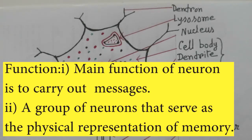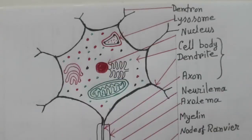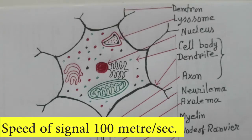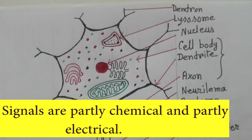The group of neurons serves as the physical representation of memory. Electrically charged chemicals flow from the first neuron's axon to the second neuron's dendrite, and from that dendrite to its own axon, and so on. The speed of a signal is approximately 100 meters per second. Signals are partly electrical and partly chemical.